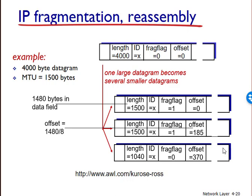At your book's website, the authors have provided a Java applet that generates fragments. You provide the incoming datagram size, the maximum transmission unit, and the incoming datagram identification, and the applet automatically generates the fragments for you. You can access this at www.awl.com/Kurose-Ross.